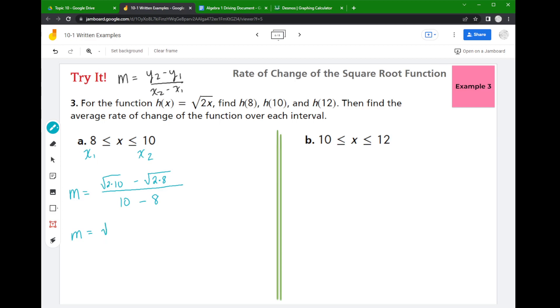Now before I take this to Desmos, we're definitely going to do a bit of a cleanup step here. So first thing I can multiply the stuff inside the square roots. So 2 times 10 is 20, 2 times 8 is 16, and down below 10 minus 8 is 2.